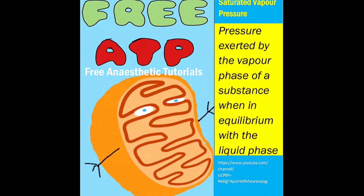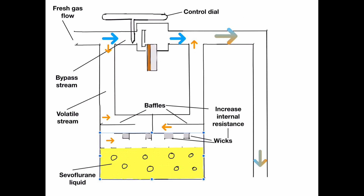It achieves saturation by a number of mechanisms. Number one: wicks and baffles. These ensure that the gas flow is slowed, maximizing contact area with the volatile, giving the volatile every chance to vaporize and join the fresh gas flow. These wicks and baffles significantly increase the internal resistance to flow of the vaporizer. The saturated vapor from the volatile stream then rejoins with the fresh gas from the bypass chamber, which dilutes the volatile concentration to an appropriate and safe amount to maintain the desired level of anaesthesia.